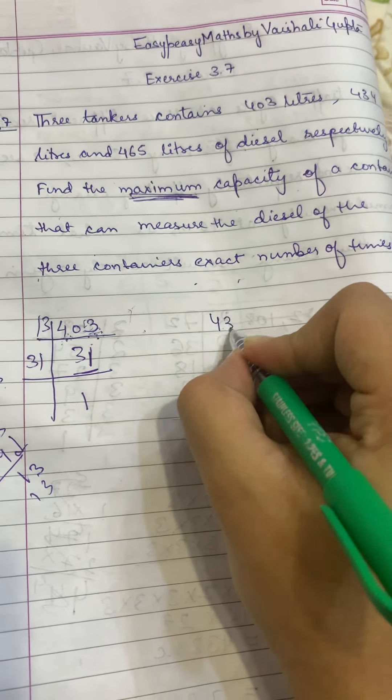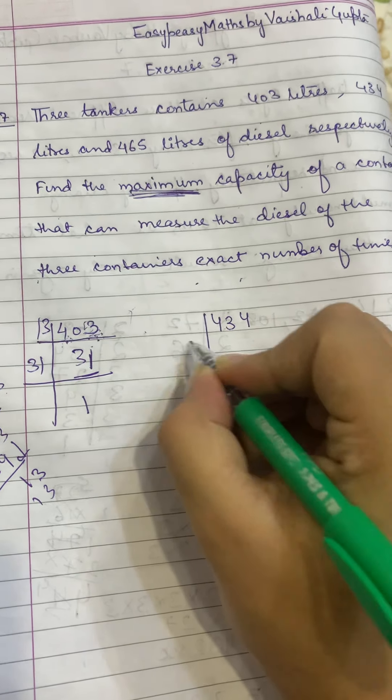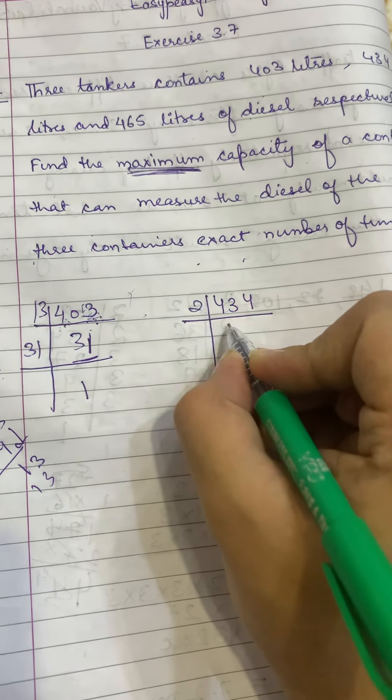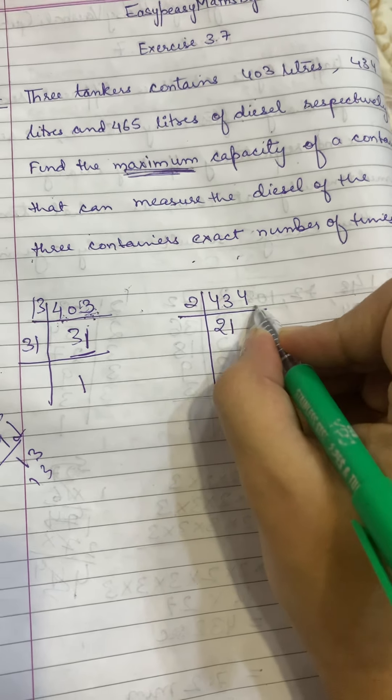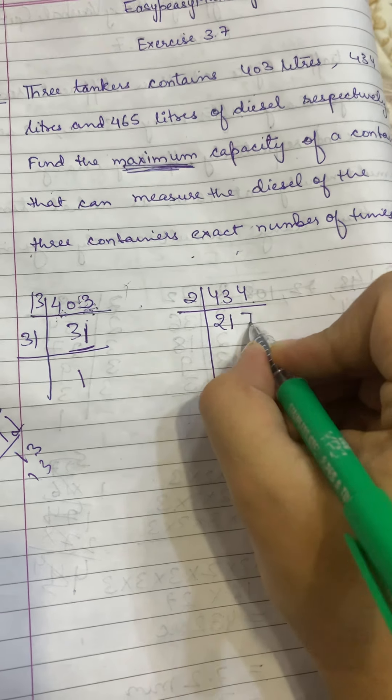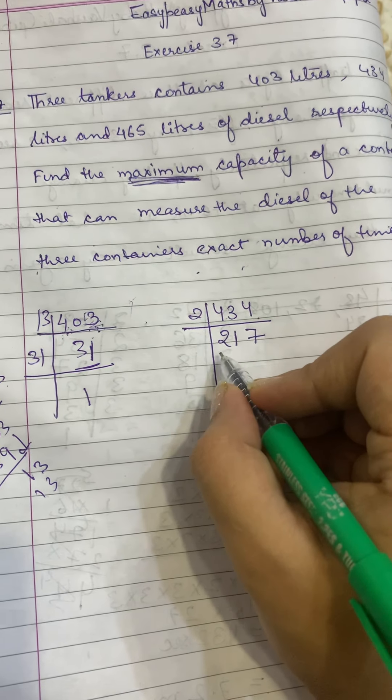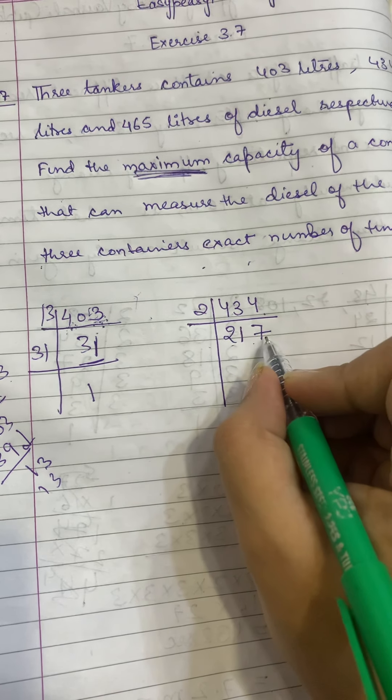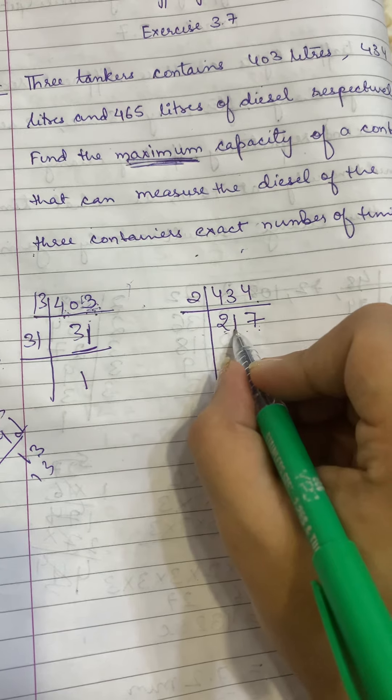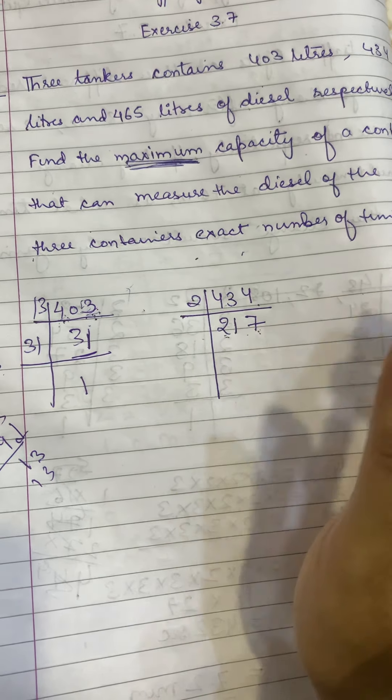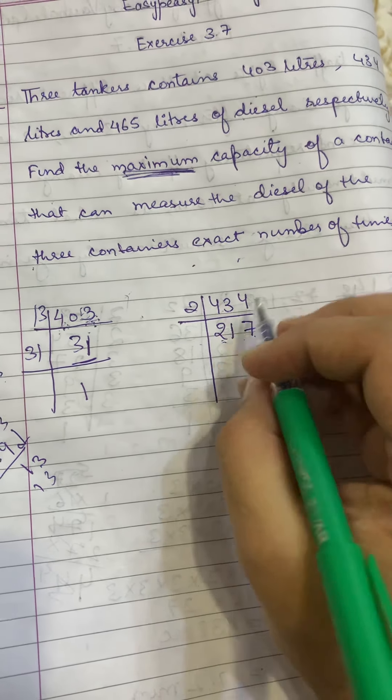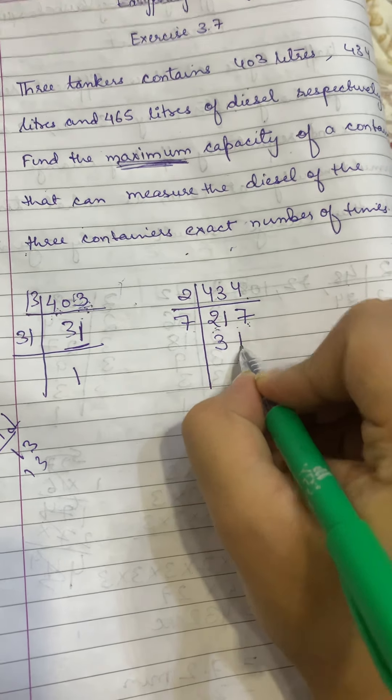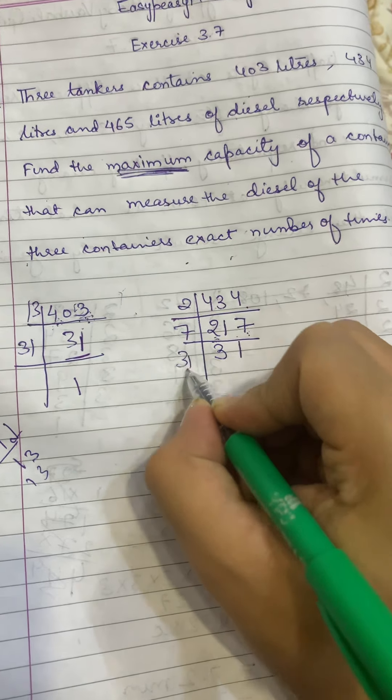Then we will take 434. This is the prime factor. So it will go by 2. 2 times 2 is 4, 2 is 2. Here 14 divided by 2 is 7. Then this is not 3. Then 7 plus 2 is 9, plus 1 is 10. Sum of digits is not divisible by 3. 5 is not going to go. Then 7 is check. 7 times 3 is 21. Again 31 is the prime factor.